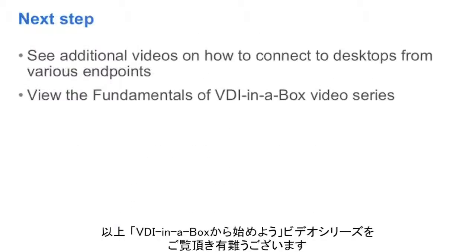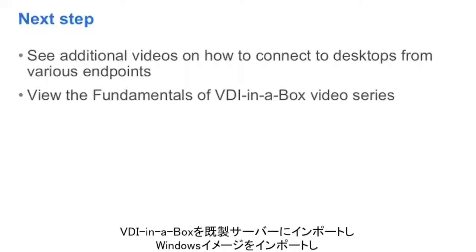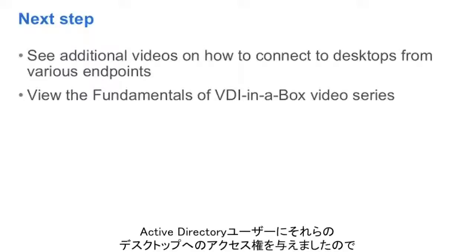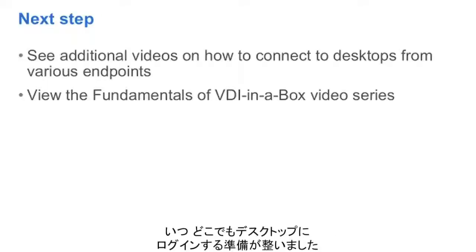This concludes the Getting Started with VDI in a Box video series. You have imported VDI in a Box to your off-the-shelf server. You have imported a Windows image and published it as your golden image. You have then generated desktops from templates and granted your Active Directory users access to them. You are now ready to log into your desktop from anywhere, anytime.